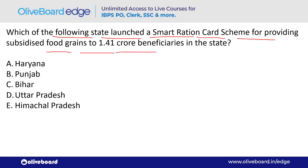Which state launched a smart ration card scheme to provide subsidized food grain to 1.41 crore beneficiaries? The answer is Punjab — option B.